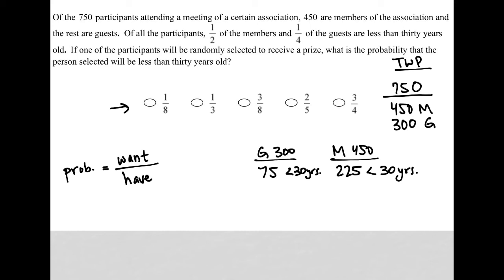So let's start back with the beginning of this sentence. If one of the participants will be randomly selected to receive a prize, what is the probability that the person selected will be less than 30 years old? So I want someone less than 30. How many people are less than 30? Well, 75 guests plus 225 members. So there are 300 people who are less than 30.